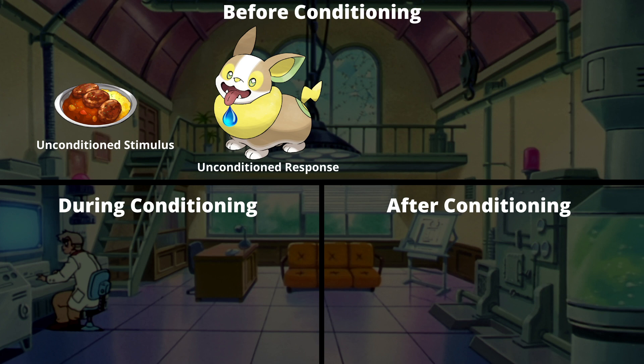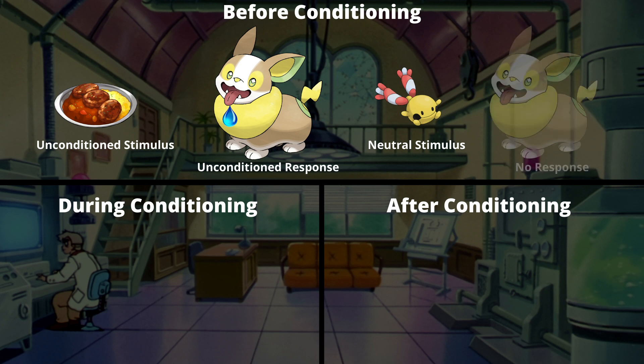This is where our conditioning or training comes in, because we can now associate the unconditioned response — Yamper's drooling when the curry is close by — with a neutral or unassociated stimulus, which in this experiment will be the sound of a Chingling ringing before the curry comes out. On its own, our neutral stimulus, the sound of Chingling ringing, won't cause a notable reaction from Yamper because it's just not associated with the curry quite yet.